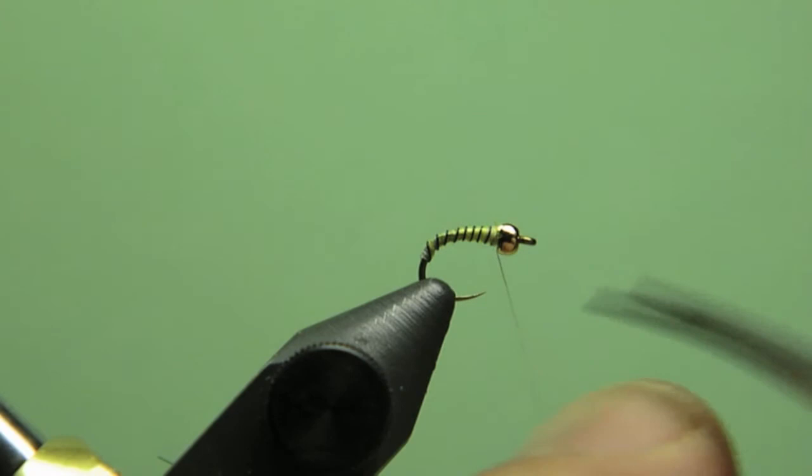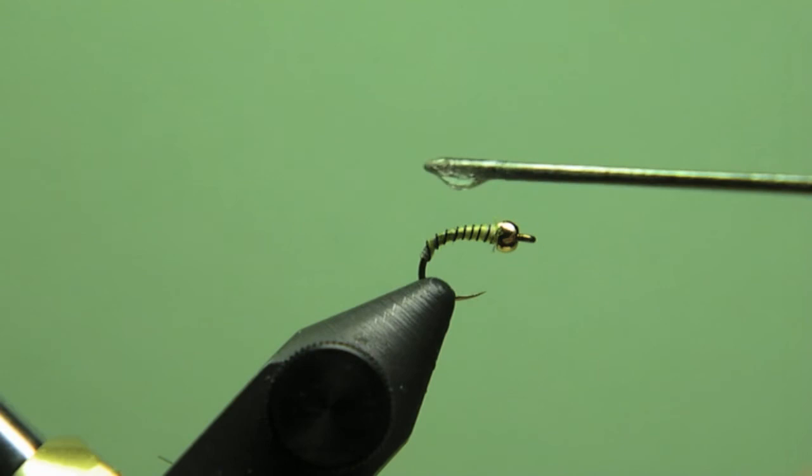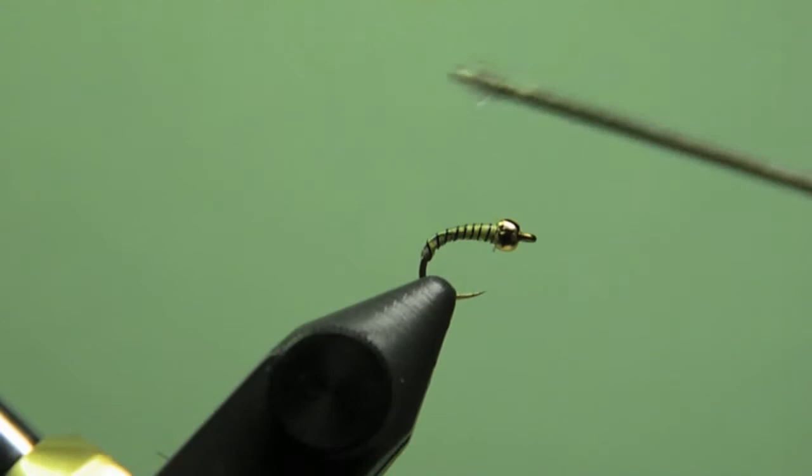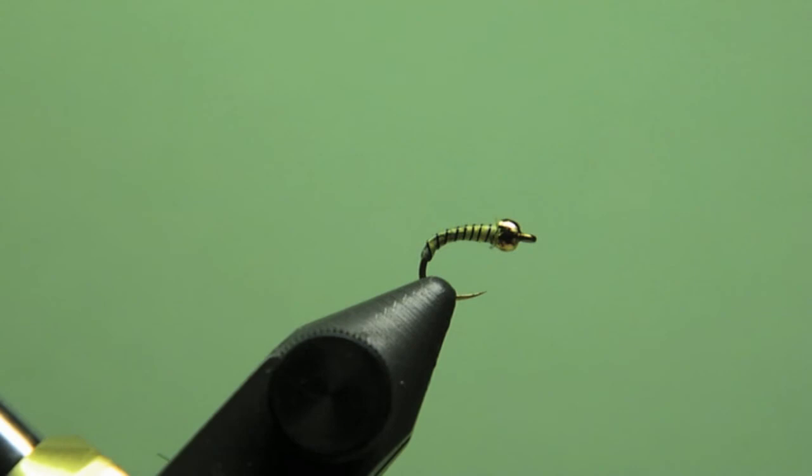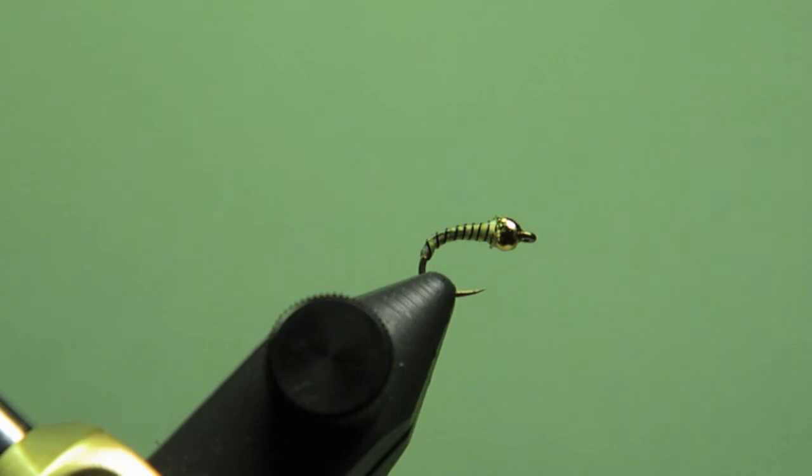Another thing I like to do is coat my flies with a bit of Zap-a-Gap. Some guys like to use epoxy and that works as well. But I find just using a little bit of Zap-a-Gap and using a little bodkin here really gives a nice shine to the fly. And it definitely strengthens it up. You can use superglue but I've had better success using Zap-a-Gap.